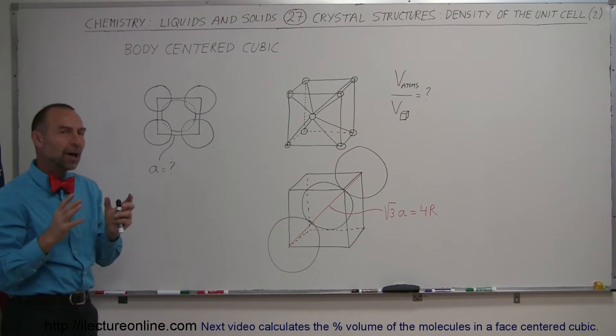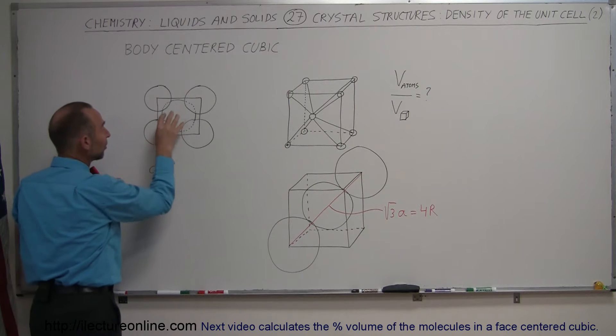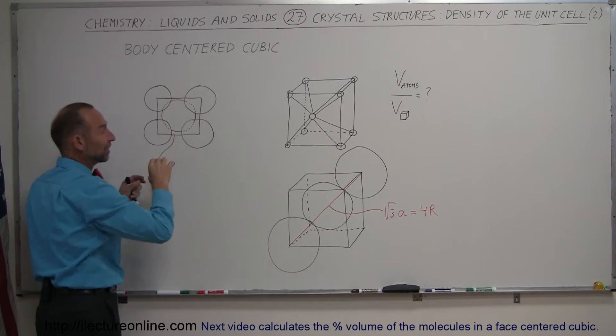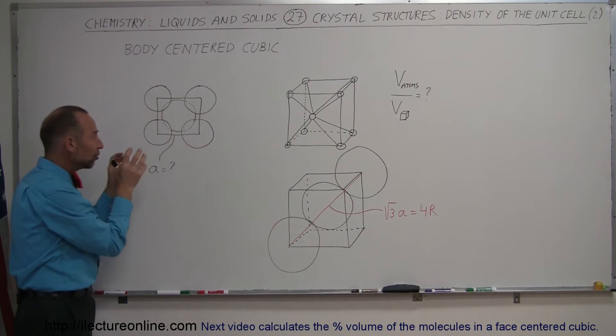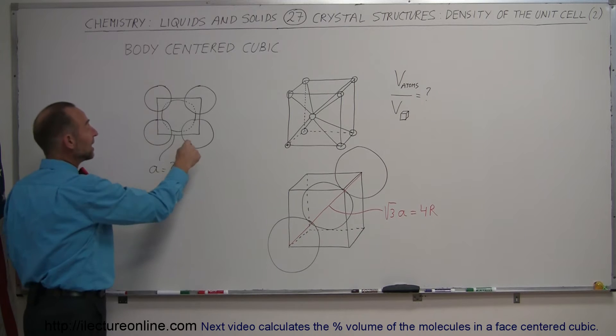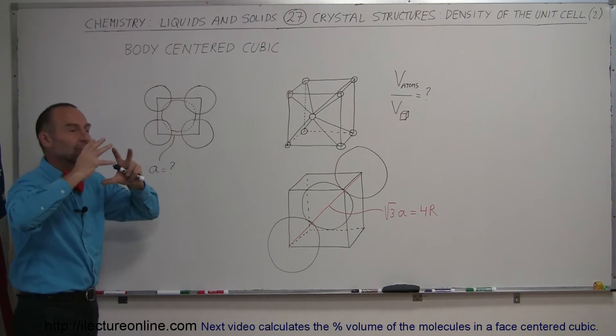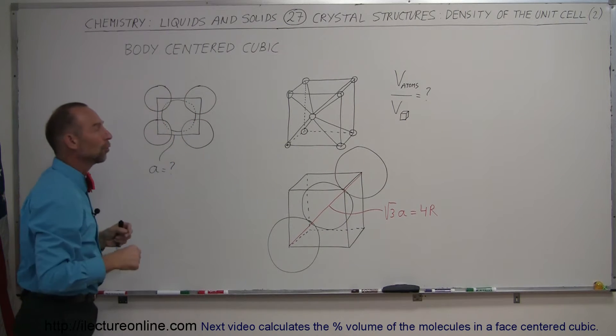So first of all, how many atoms are now contained within this simple cube? Keep in mind that because this atom is at the very center, it pushes the eight atoms at each corner of the cube a little bit farther apart, where it's not likely that two will actually touch each other. What's touching is the atoms at the corners with the one in the middle. The one in the middle is pushing the ones at the corners out a little bit, and there's probably going to be some gaps between those atoms.